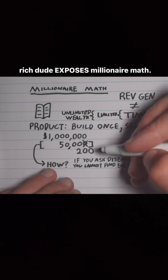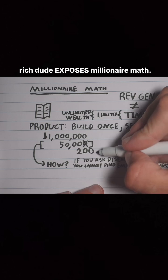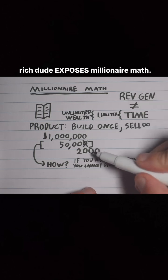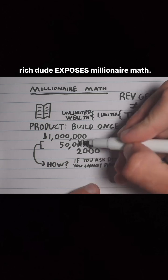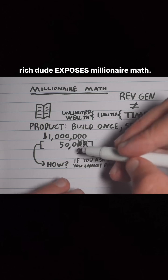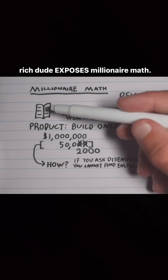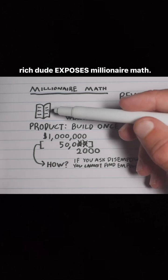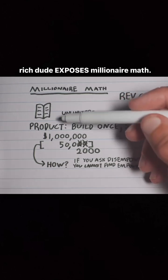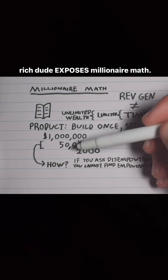Since thousands of people have already proven that this formula works, the next step is to add another zero, making your product price $2,000. But that also knocks off another zero from the 50,000 — now we're down to 500 customers, and you're still making a million dollars.